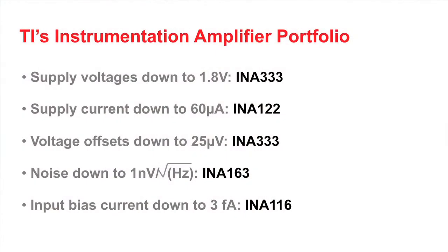In TI's two- and three-stage instrumentation amplifier portfolio, there is a wide selection of these devices including those with programmable gains, supply voltages from 1.8 volts up to plus minus 15 volts, supply currents below 60 microamps, offsets of 25 microamps, noise of 1 nanovolt per square root hertz, and even input bias currents in the femtoamp range. So no matter the application or spec requirements, TI has an instrumentation amplifier to do the job. For more information about TI's instrumentation amplifier portfolio, please visit www.ti.com/instrumentation-amp to find product information and order samples.